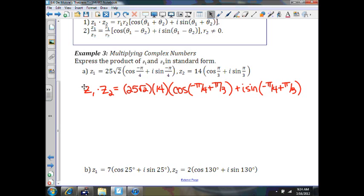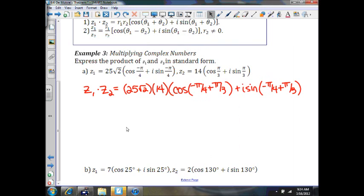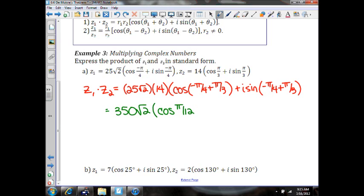Now when we do this, 25 times 14 is 350, so we can actually keep this. 350 square root of 2 times cosine of negative pi over 4 plus pi over 3. Our common denominator is 12, so that's going to be negative 3 pi over 12 plus 4 pi over 12, which will actually equal pi over 12.